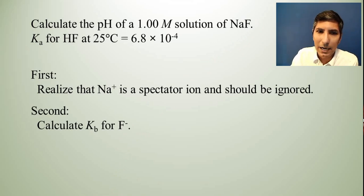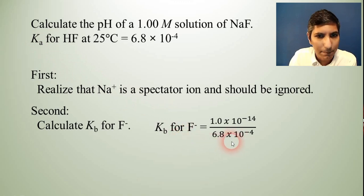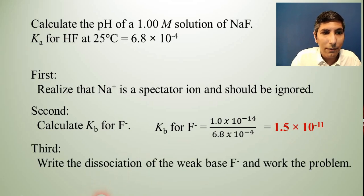And our next step, once we realize that, is to calculate the Kb for this fluoride ion. So we know what the Ka is. So to find the Kb, we just take 1 × 10^-14 and divide by the Ka that we had. So that means that the Kb will be 1.5 × 10^-11. So there we have our next step. So now, once we have that, let's write the dissociation of the weak base, F-, and work the problem just like we always have. So now we can do that.